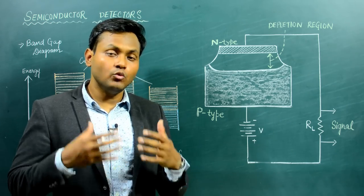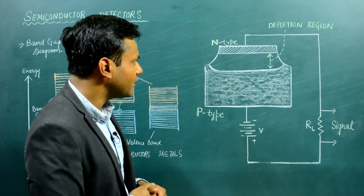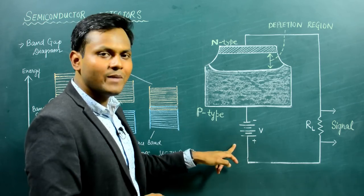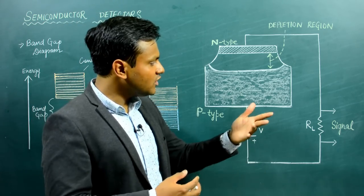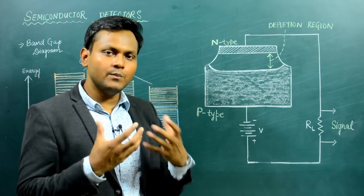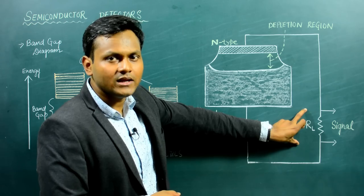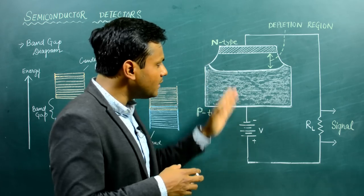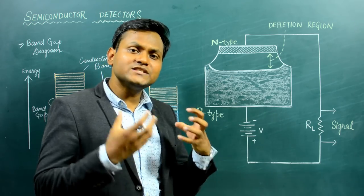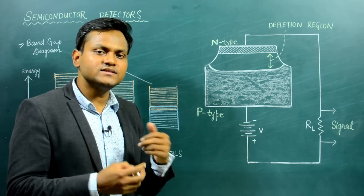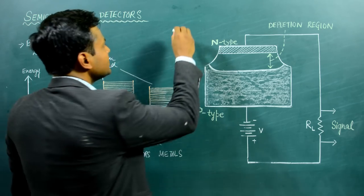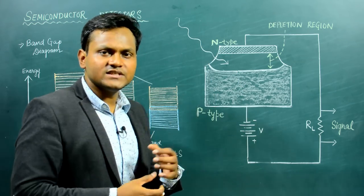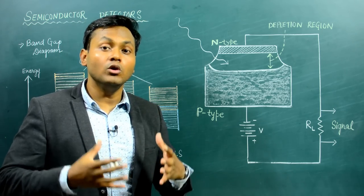To understand how this setup works as a nuclear detector, let's look at this particular diagram. A P-N junction diode is connected in reverse bias to an external battery and a load resistance RL. There is some electronics associated with the load resistance which is capable of detecting the potential drop across RL and also the current pulse associated with it. In reverse bias configuration, there is a minimum amount of current flowing through the circuit. What is going to happen if an external nuclear particle like an alpha particle enters the depletion layer?